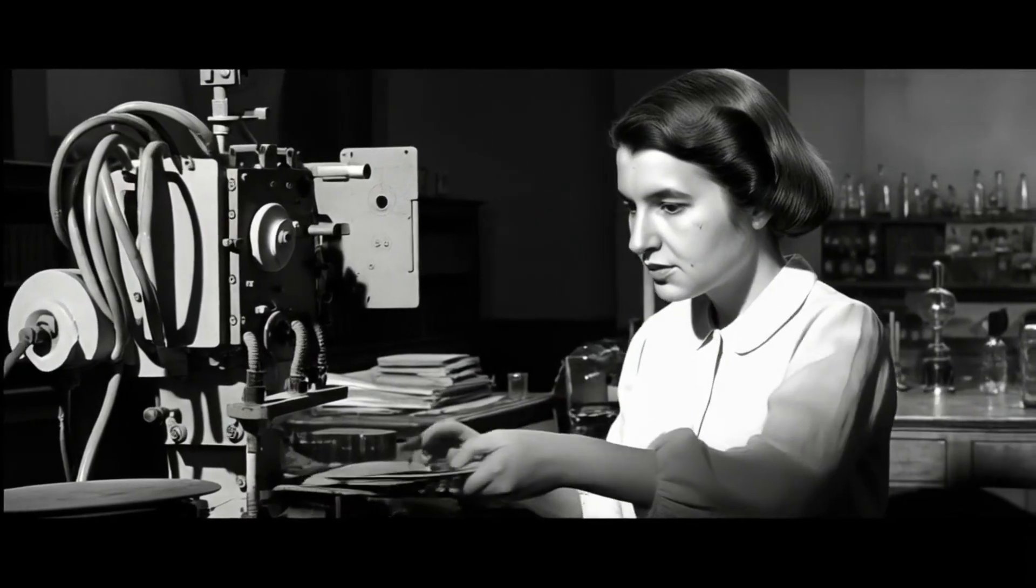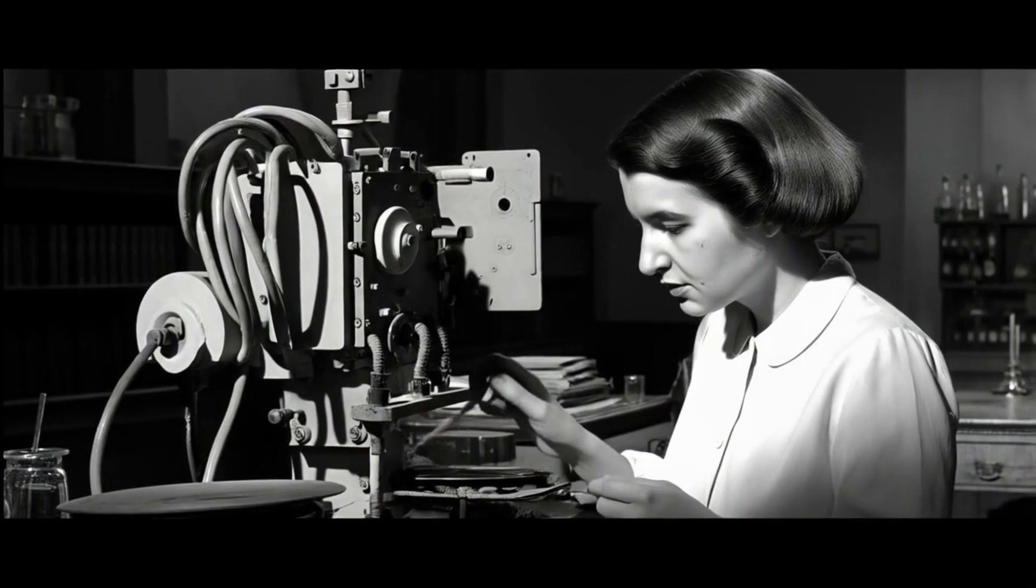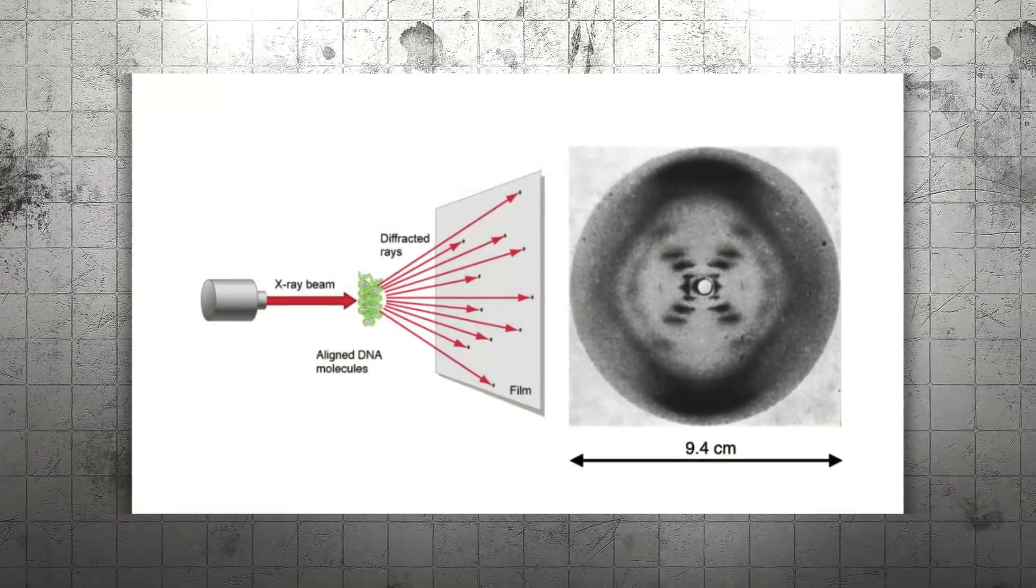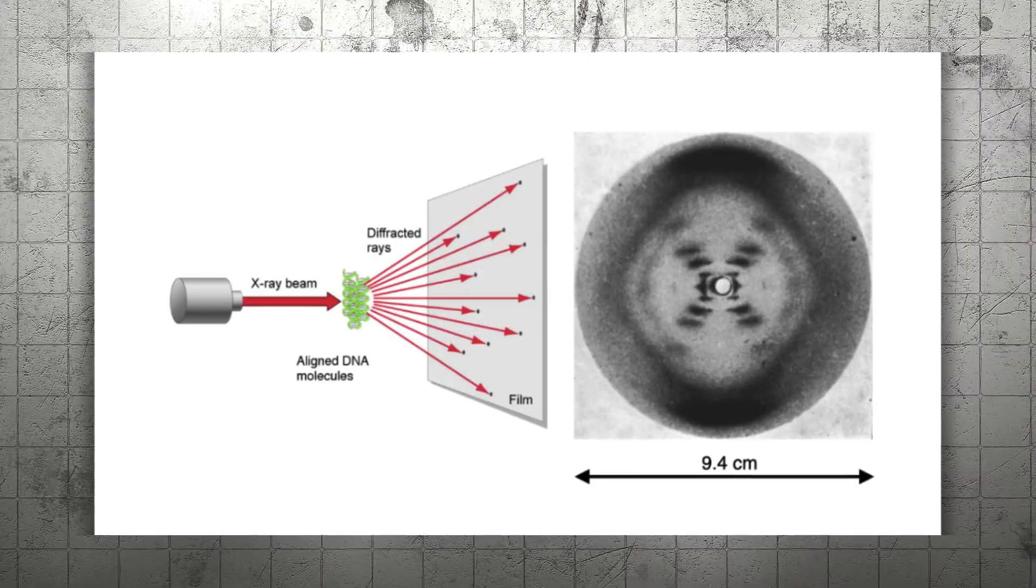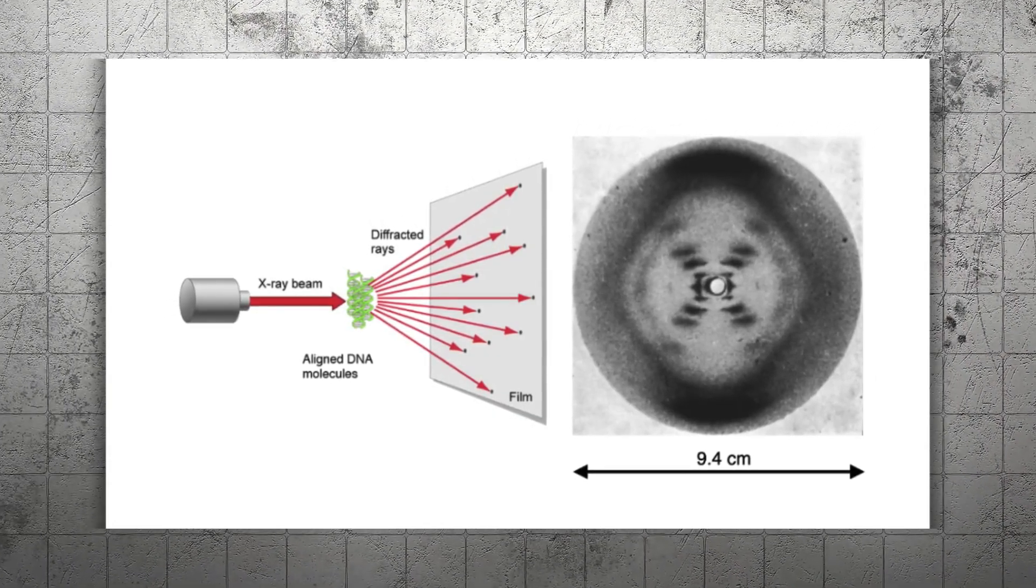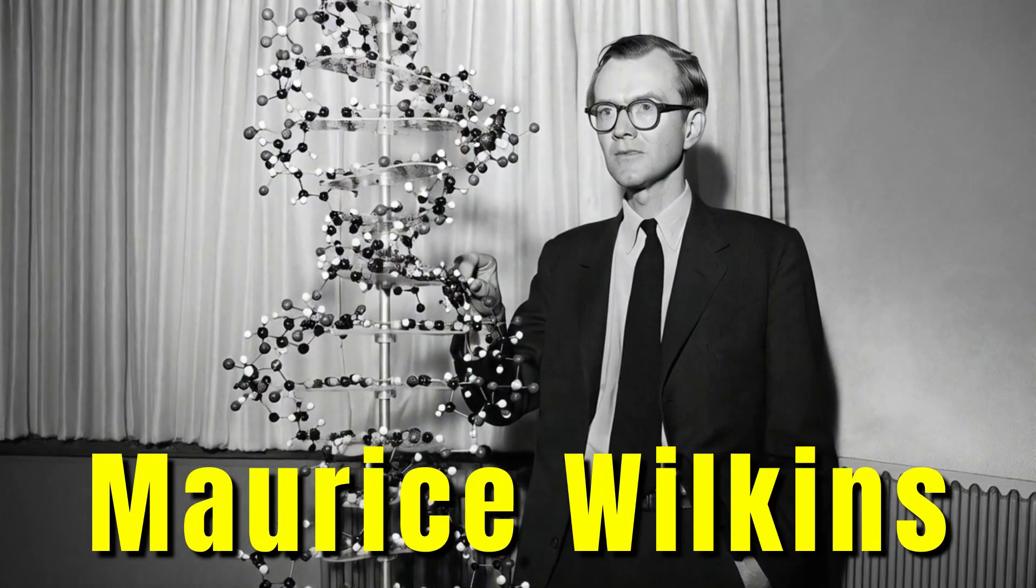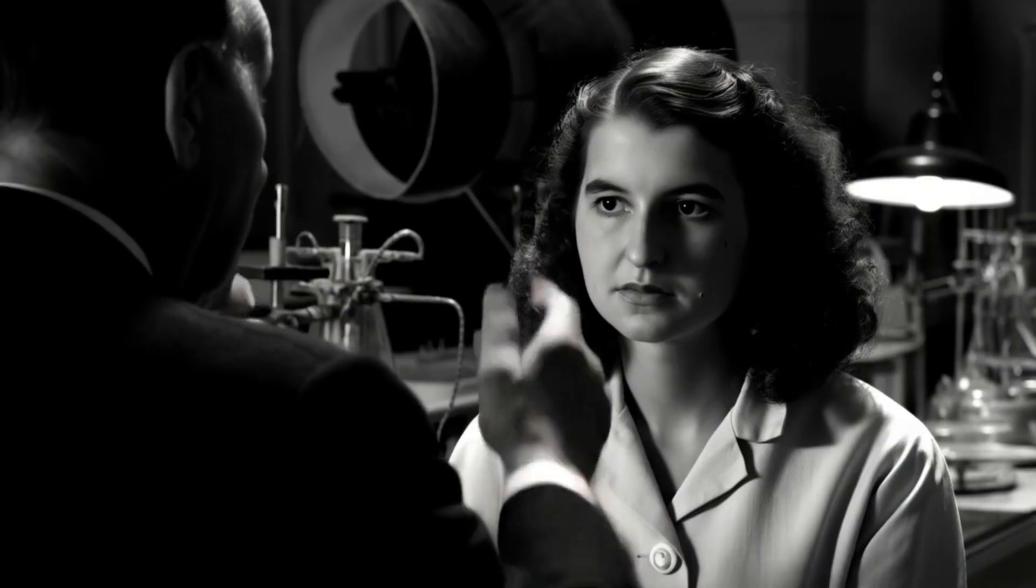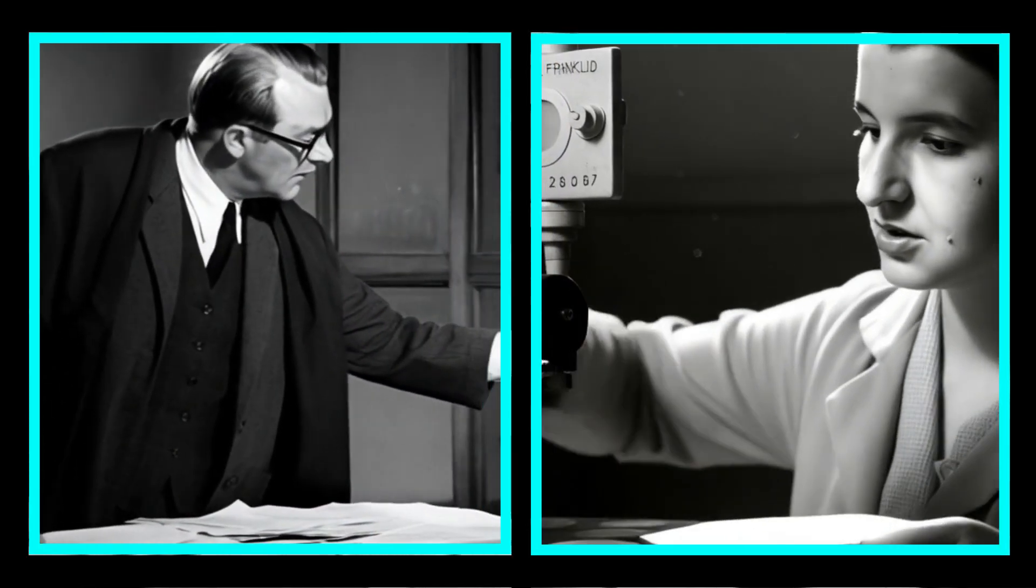Rosalind Franklin was a master of precision. Her X-ray diffraction work was years ahead of its time. She revealed patterns in DNA that no one else could see so clearly. Every photograph she captured carried the fingerprints of a hidden structure. Yet Franklin's brilliance clashed with her colleague, Maurice Wilkins. Misunderstandings and tension filled their partnership. Instead of collaboration, rivalry grew in their own lab. This divide would play a key role in how history unfolded.